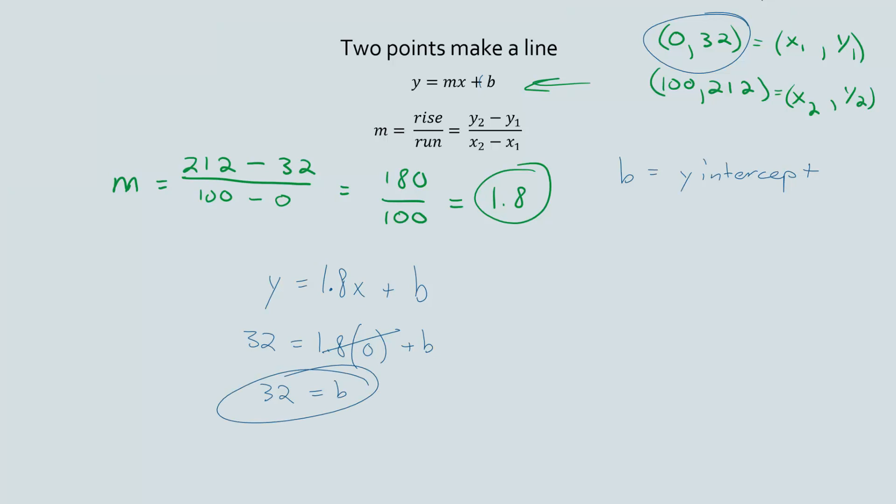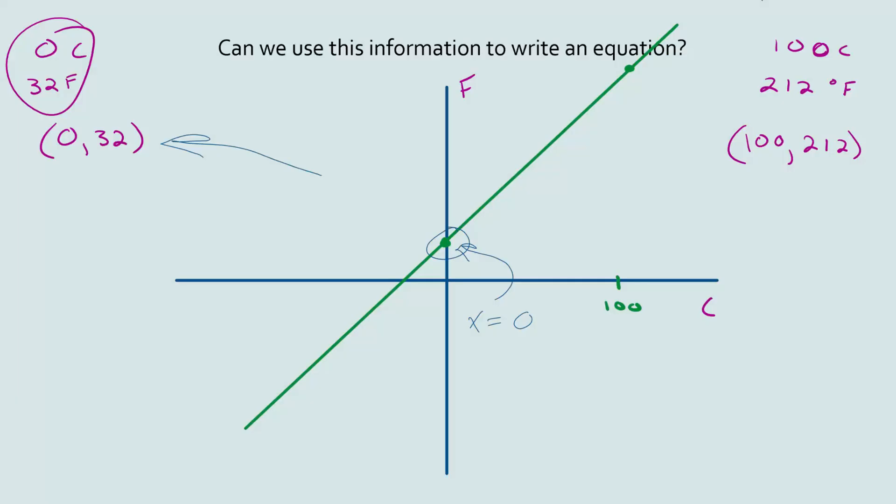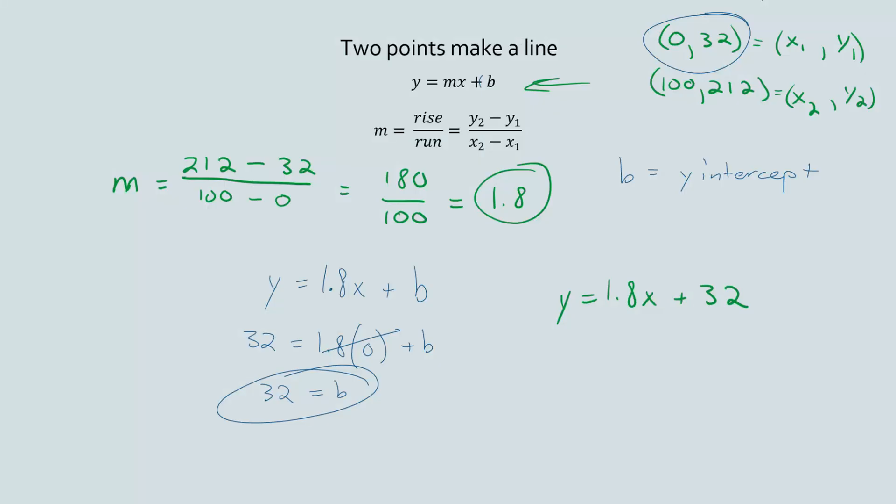Now we have the full equation. So now we know that y is equal to 1.8x plus 32. But I've been using y and x because that's what I'm familiar with with the y equals mx plus b. But for this equation, what was the y-value and what was the x-value? On our x-axis we were using Celsius, y value we were using Fahrenheit. So for Fahrenheit, to calculate Fahrenheit, you would take the Celsius value, multiply it by 1.8 and add 32. Here's the equation of our line.